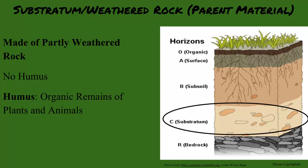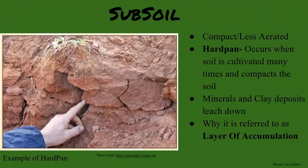Above this layer is the subsoil. It is more aerated than the substratum, but it can contain an impermeable layer called hardpan. This is due to leaching of minerals from the topsoil and makes a layer of accumulation.